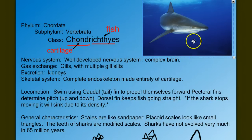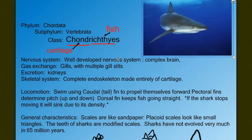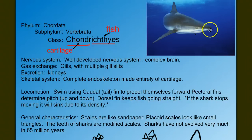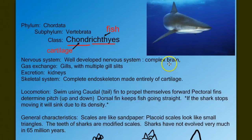Chondrichthyes do have a complete endoskeleton with the skull, vertebrae, and ribs. They have a well-developed nervous system — sharks smell very well, and their eyesight varies by species. They also have a good sense of feel and can pick up electrical fields around them, with interesting sensory structures in their snout. When you look at the nostrils on a fish, whether a shark or any other type, the nostrils are for smell, not breathing, because fish have gills.